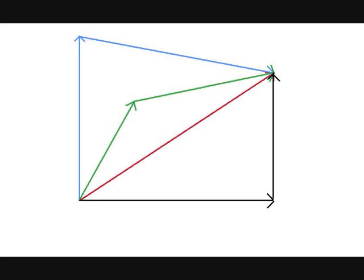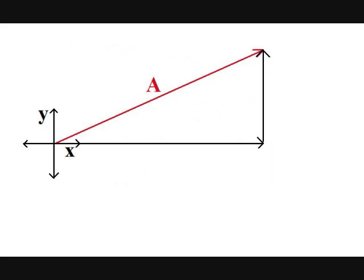Now it's very useful to represent any vector you encounter with the following two vectors: a horizontal vector lying along the x-axis, and a vertical vector lying along the y-axis. Say we have a vector A that has magnitude A and angle theta above the horizontal. I will call the vector parallel to the x-axis A sub x, and the other A sub y. These three vectors — A, A sub x, and A sub y — form a triangle.